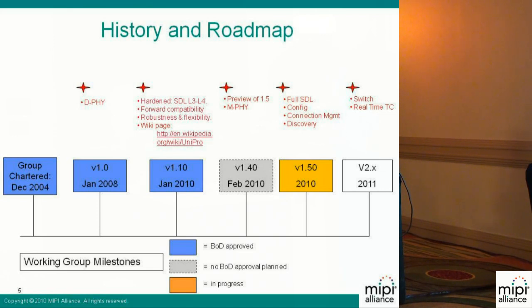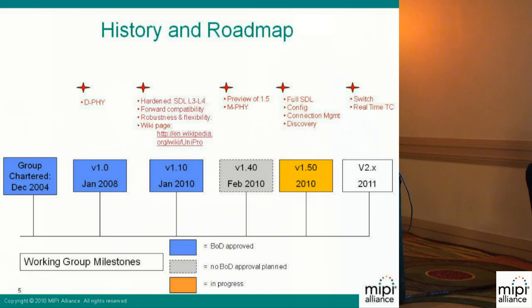We are now working to finalize version 1.5 of UniPro, which will have the full SDL model for all layers, plus the config layer, connection management features, and device discovery. We expect this version to be approved by the board later this year. The future is version 2.x, where we will specify switches to support the network architecture and add an additional traffic class called the real-time traffic class.